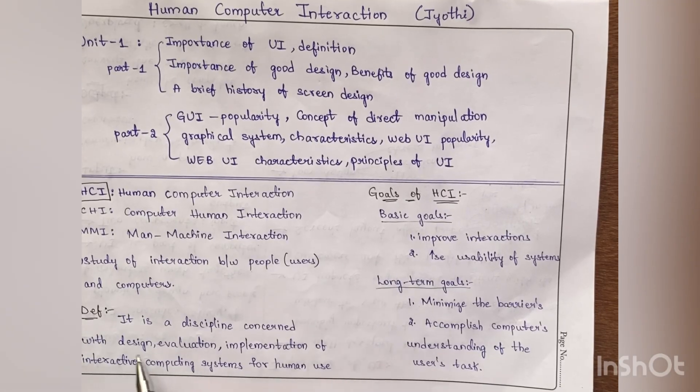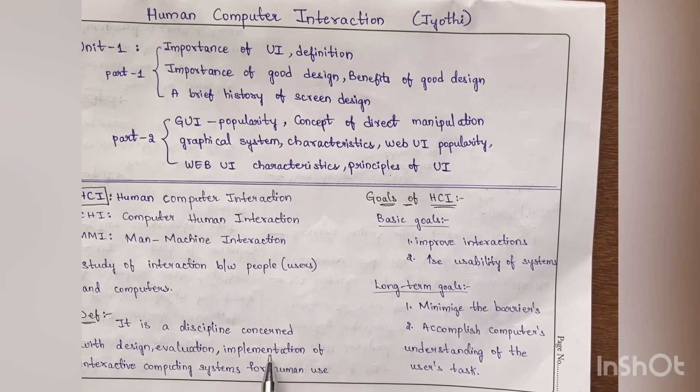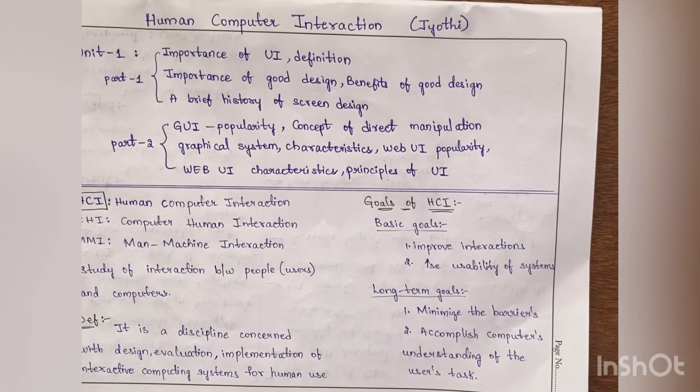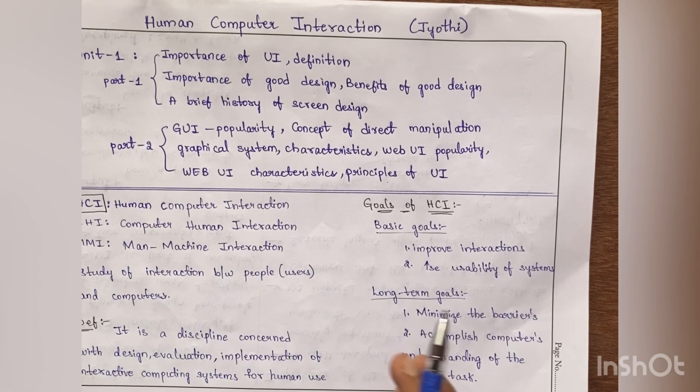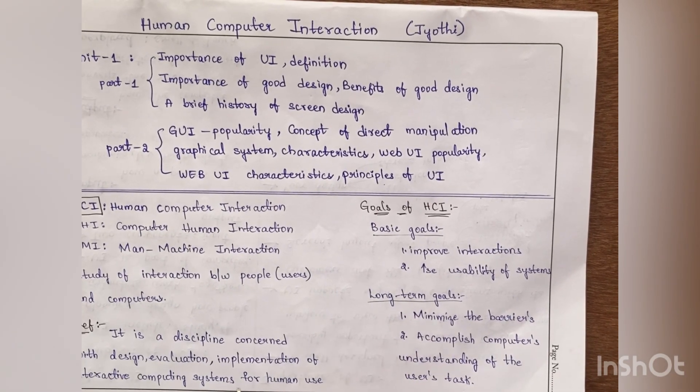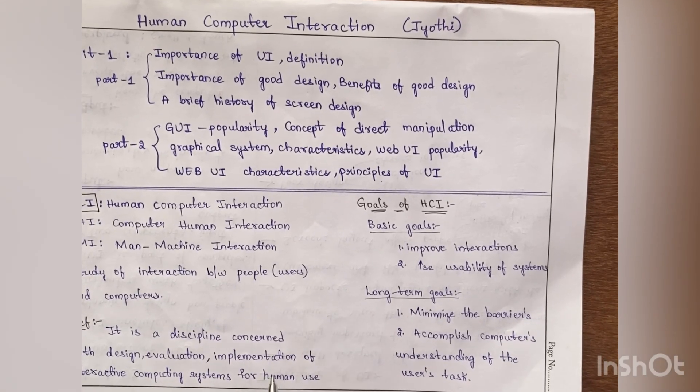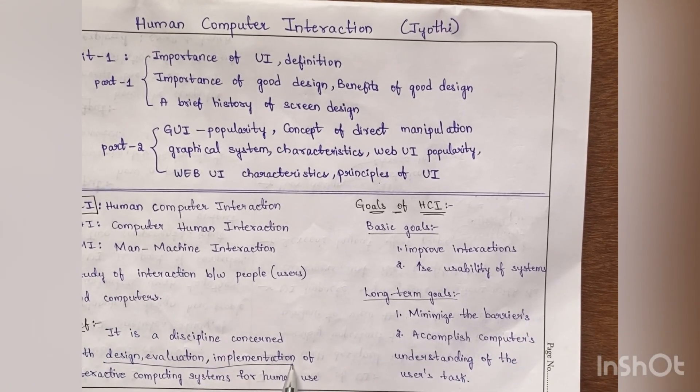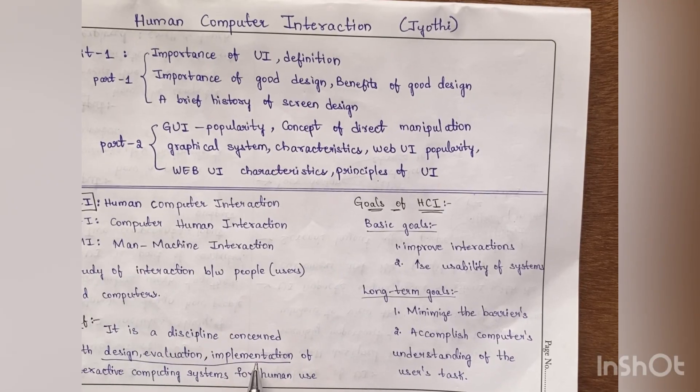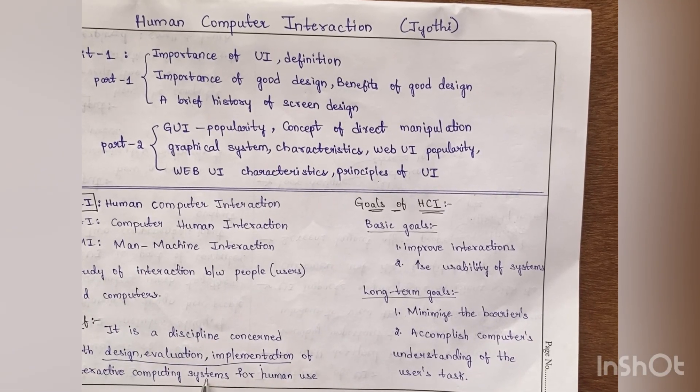So its definition goes like this: It is a discipline concerned with design, evaluation, and implementation of interactive computing systems. How that is designed, how it is evaluated, and how it is implemented. These three terms are important in its definition: design, evaluation, and implementation of interactive computing systems.